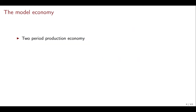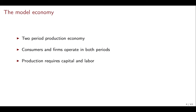The particular model economy we're going to be focusing on is a two-period production economy. In this economy, consumers and firms operate in both periods. Consumers are alive for both periods and they have to save to go from one period to another. Firms also operate through both periods and have to invest in capital that they can use in the second period. Production requires capital and labor. Finally, there's going to be a government that raises taxes to finance revenue. With this we finish this first video, and in our next video we're going to be going in depth into the consumer problem. I'll see you then.